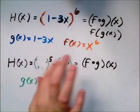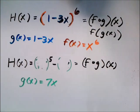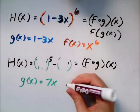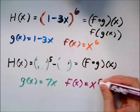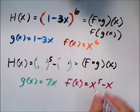And see how it was something to the fifth minus something. So that means I could call the outside function x to the fifth minus x. And so 7x was plugged into that.